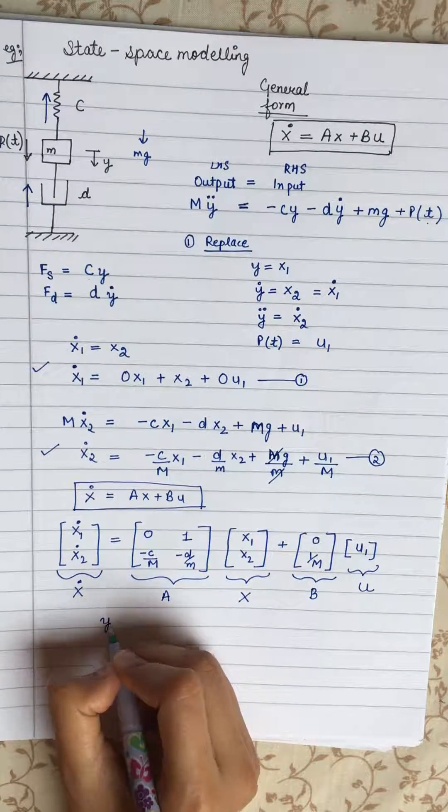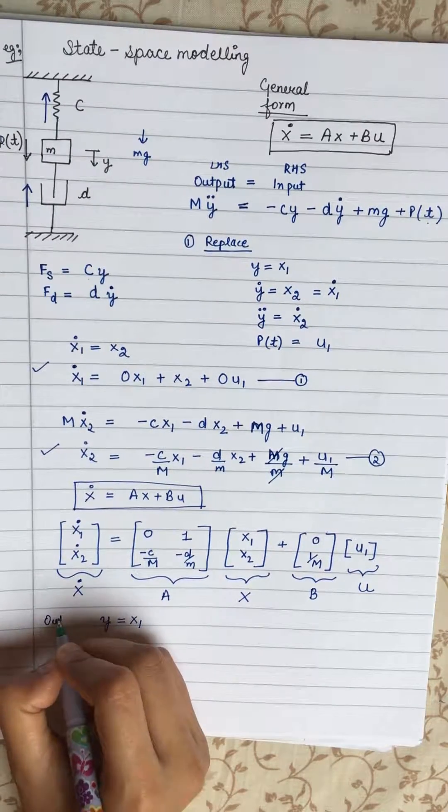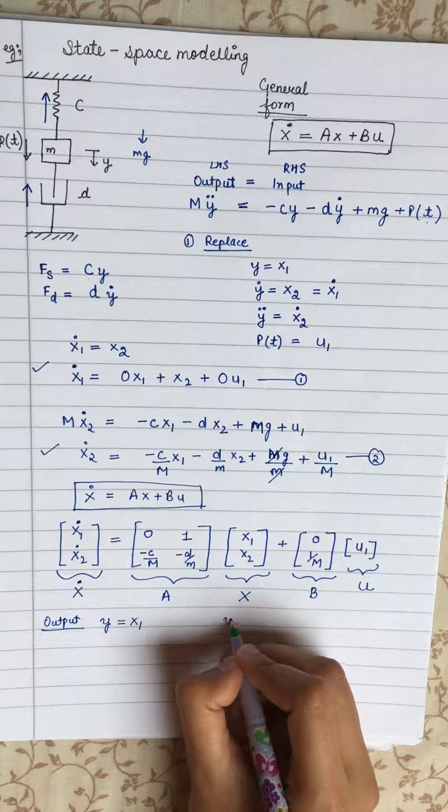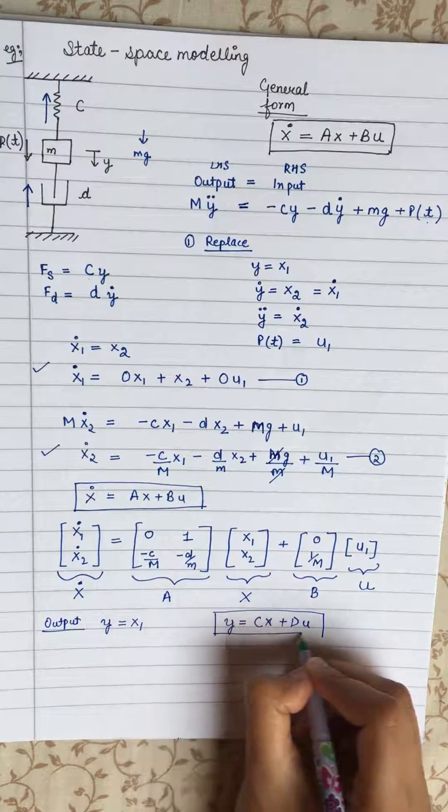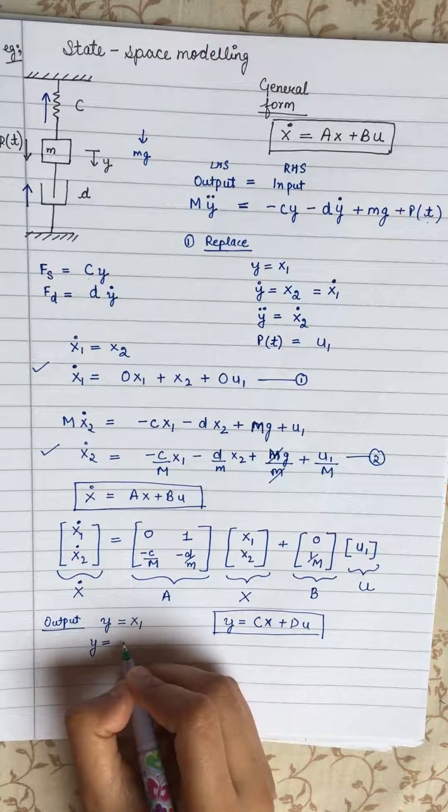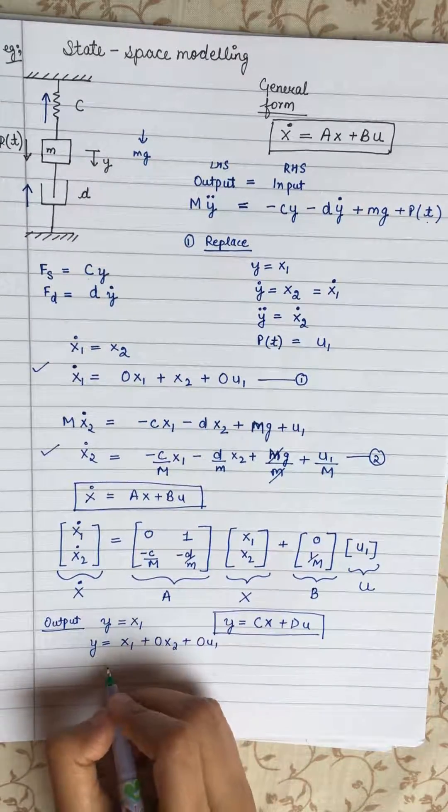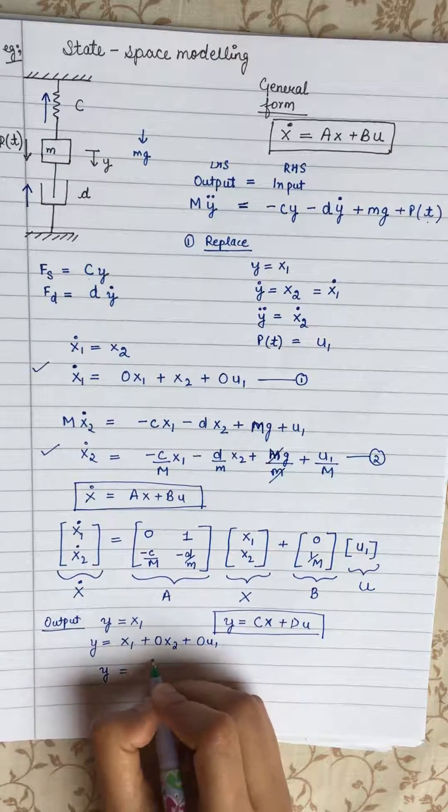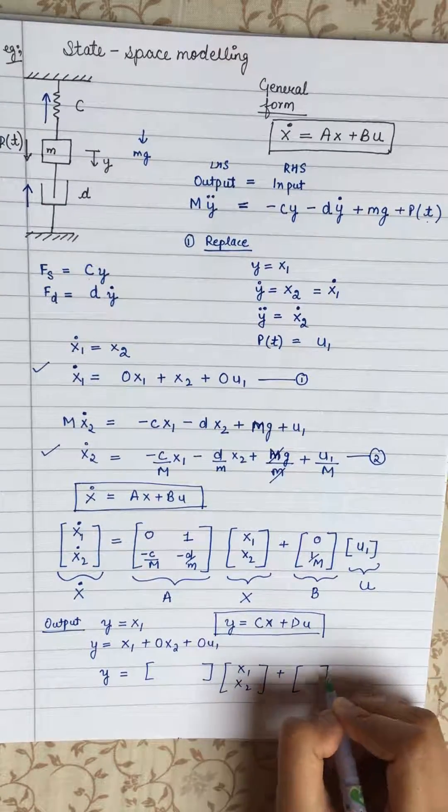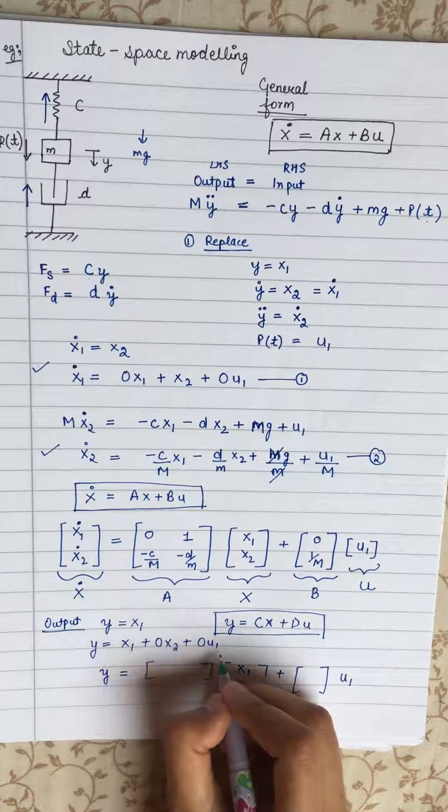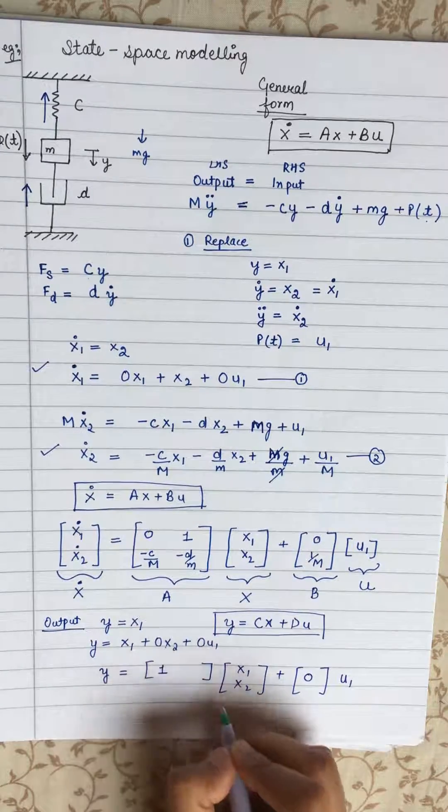So let's just say our Y is depending on X1 here as an output. So the output equation says CX plus DU. This is standard form. So this can be written as Y equals X1 plus 0X2 plus 0U1. So state space modeling will be Y equals X1, X2 plus U1. This equation, we don't have U1, so it will be 0. Here our X1 is 1 and our X2 is 0.